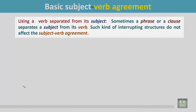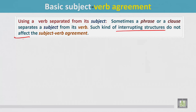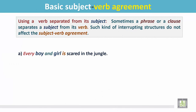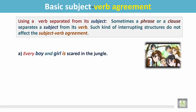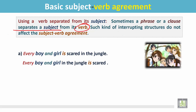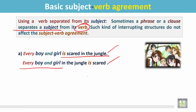Using a verb separated from its subject: sometimes a phrase or a clause separates a subject from its verb. Such interrupting structures do not affect the subject-verb agreement. For example, the sentence 'Every boy and girl is scared in the jungle' can also be written by separating the subject from its verb: 'Every boy and girl in the jungle is scared.'